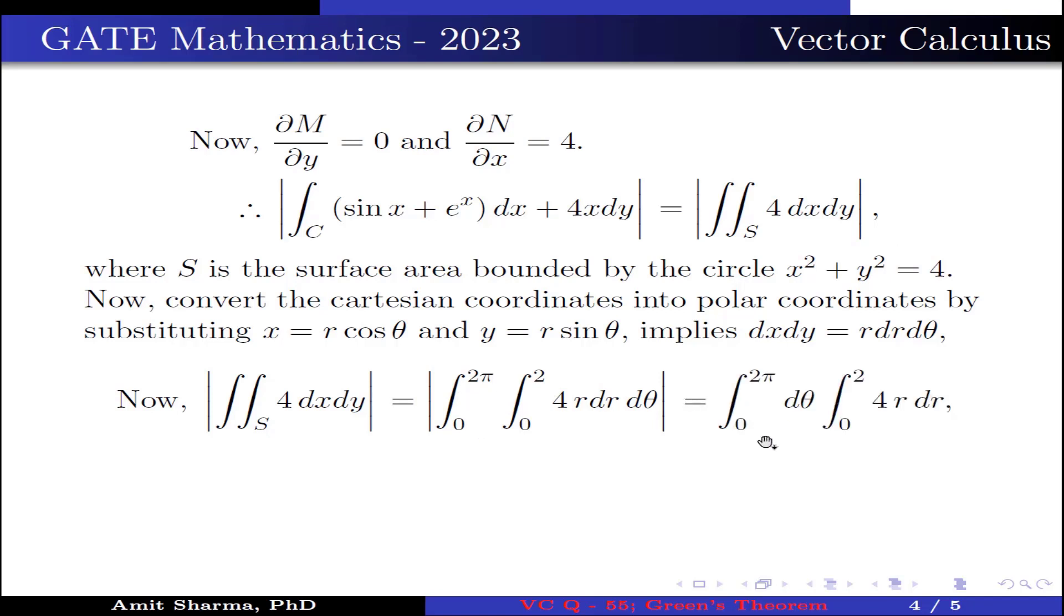This is further written as ∫_0^{2π} dθ ∫_0^2 4r dr, because r and θ are independent, which is further simplified as 4[θ]_0^{2π} [r²/2]_0^2.